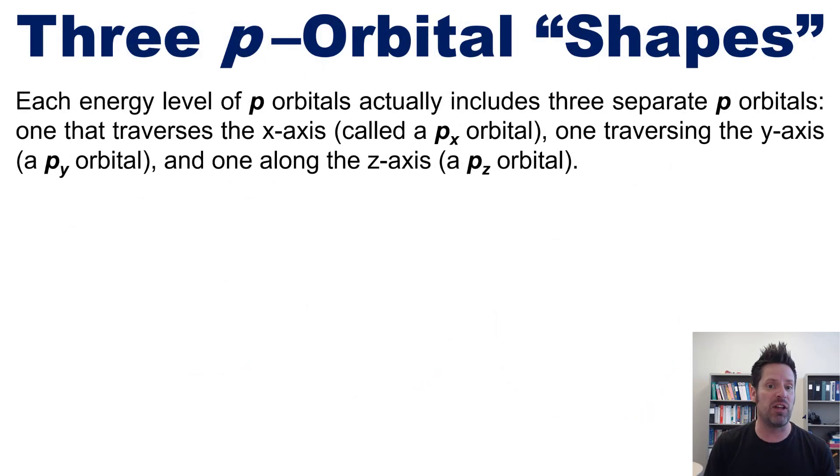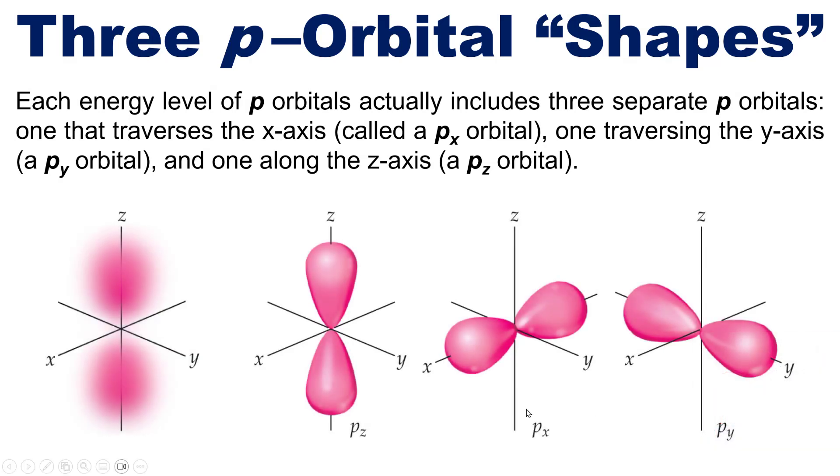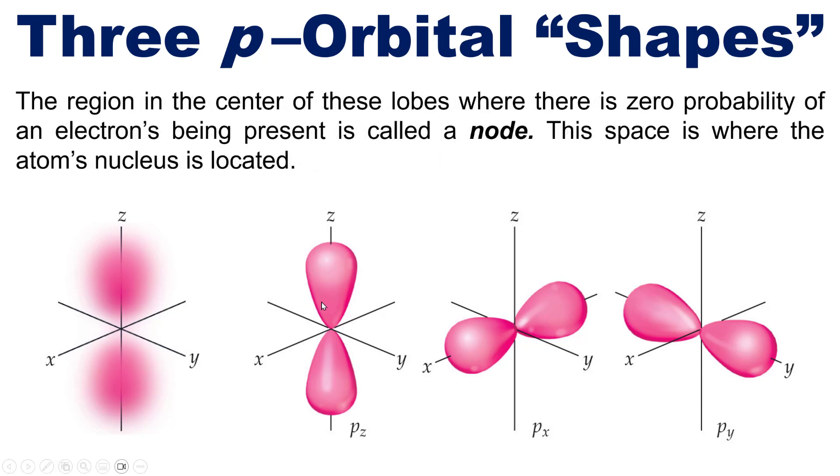Now, in contrast, each energy level of p orbitals actually includes three separate p orbitals, one that traverses the x-axis, called the px orbital right here, one traversing the y-axis, called a py orbital, and another one along the z-axis, called the pz orbital. The region in the center of each of these dumbbell lobes in these orbitals, where there is zero probability of an electron being present, is called a node. This is the space where the atom's nucleus is located.